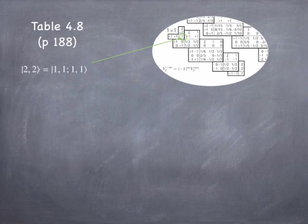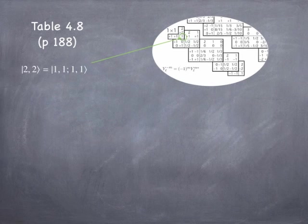The only way to make |2,2⟩ is to have both individual electron angular momenta pointing up at +1. Now, what about the |2,1⟩ state — total angular momentum 2 but z-component of 1? There are two states of the individual electrons that could contribute: |1,0⟩+|1,1⟩ or |1,1⟩+|1,0⟩. We don't know the superposition offhand. To get it, we apply the L-minus operator to the |2,2⟩ state to get |2,1⟩, which also generates combinations of the individual eigenstates.